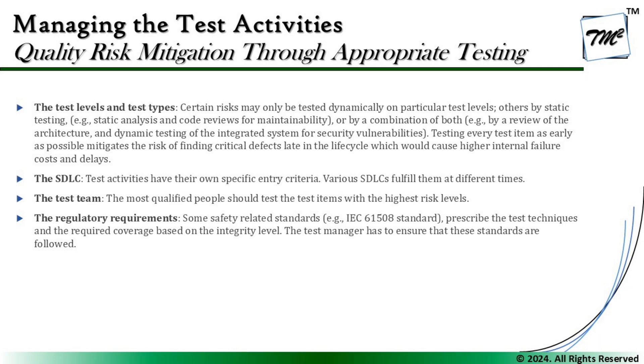The next factors are the test level and test type. Certain risks may only be tested dynamically at particular test levels; others by static testing such as static analysis and reviews; or by a combination — for example, a review of the architecture combined with dynamic testing of an integrated system for security vulnerabilities. Testing every test item as early as possible mitigates the risk of finding critical defects late in the life cycle, which would cause higher internal failure costs and delays. We should always prioritize critical items early.